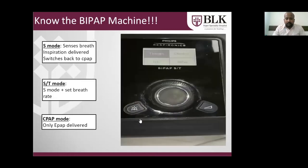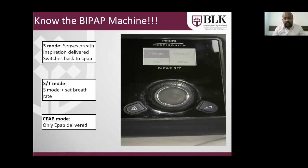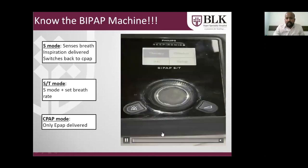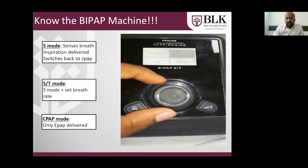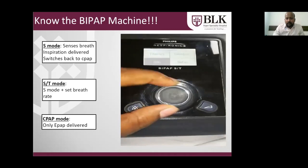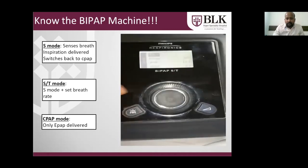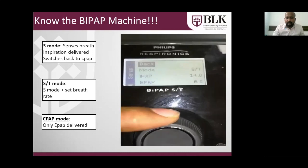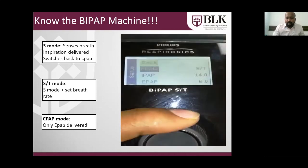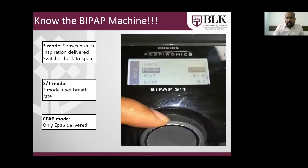In this video I am going to show you the BiPAP machine and how it can be set up for use in the pediatric ICU. This is the most simple BiPAP machine available in most pediatric critical care units. As you can see, there are four modes: therapy, comfort, setup, and info. Going into setup, we have different modes of BiPAP that can be opted for — ST mode, CPAP mode, and S mode.